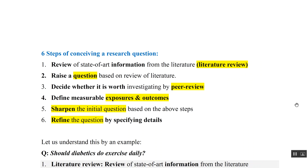There are six steps to conceive a research question. First, review the state-of-the-art information from the literature. Second, raise a question based on that review. Third, decide whether it is worth investigating, with help from peers. Fourth, define measurable exposures and outcomes. Fifth, sharpen the initial question — narrow it down and make it more specific. Sixth, refine the question by specifying further details.